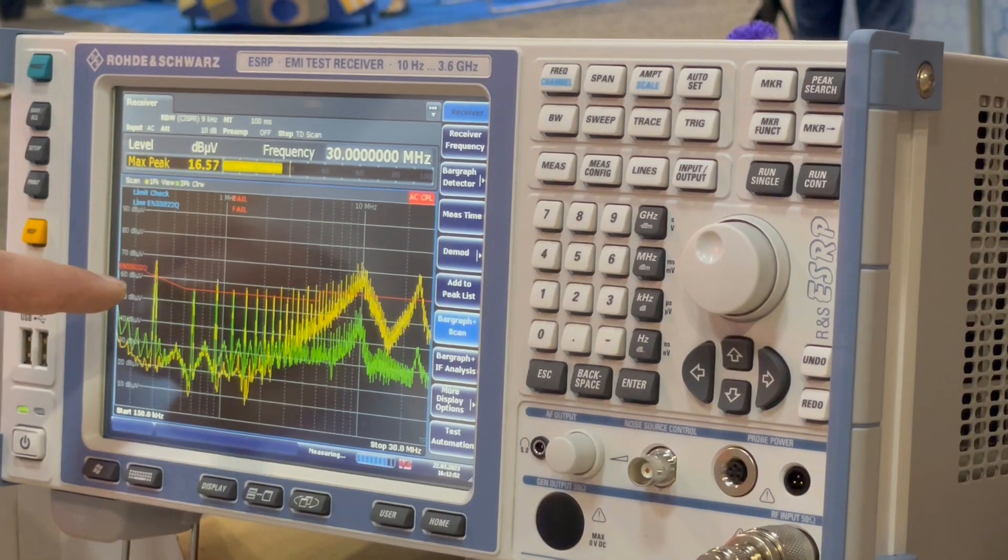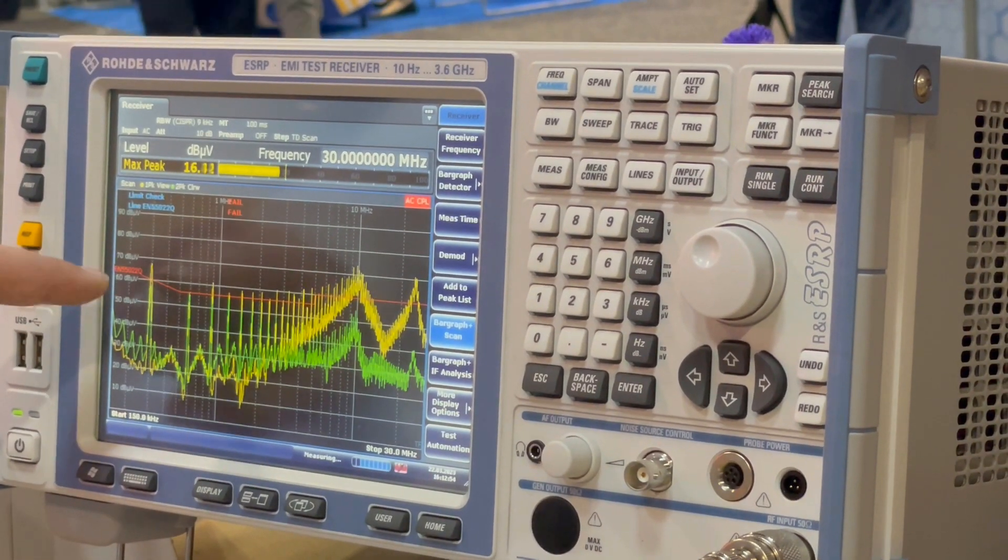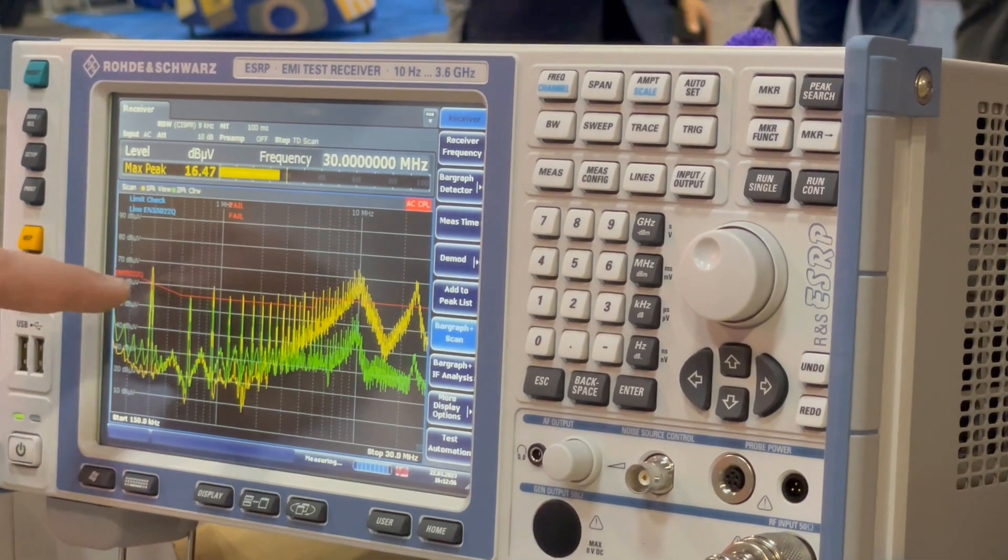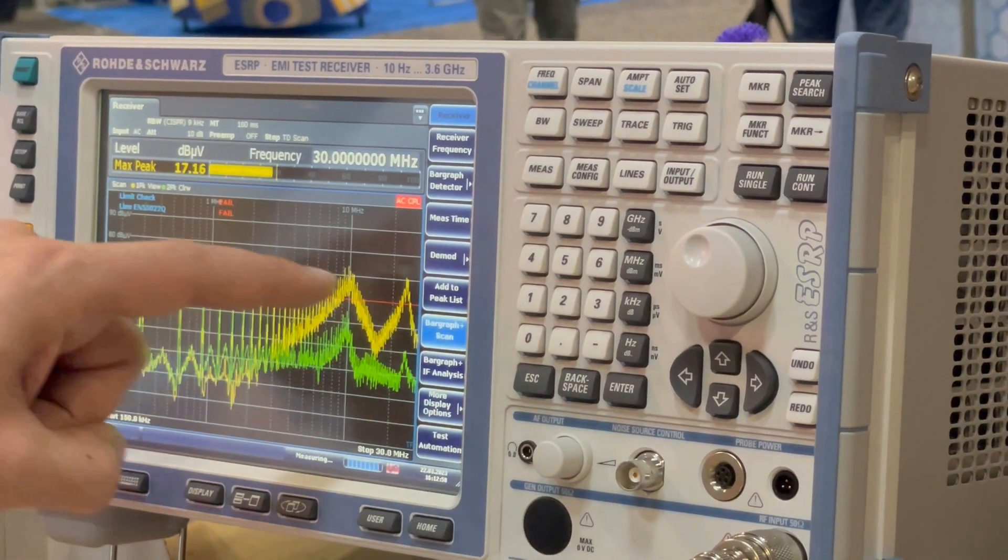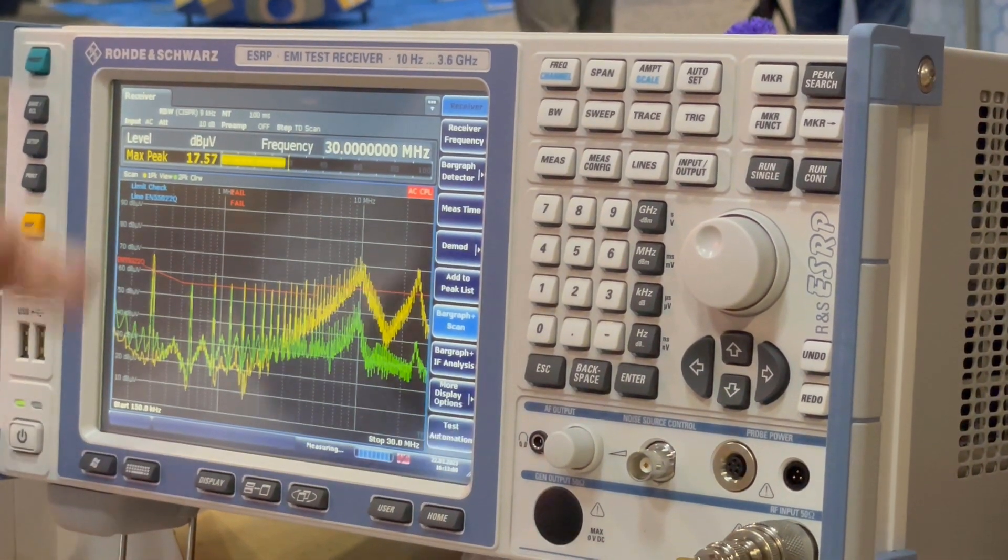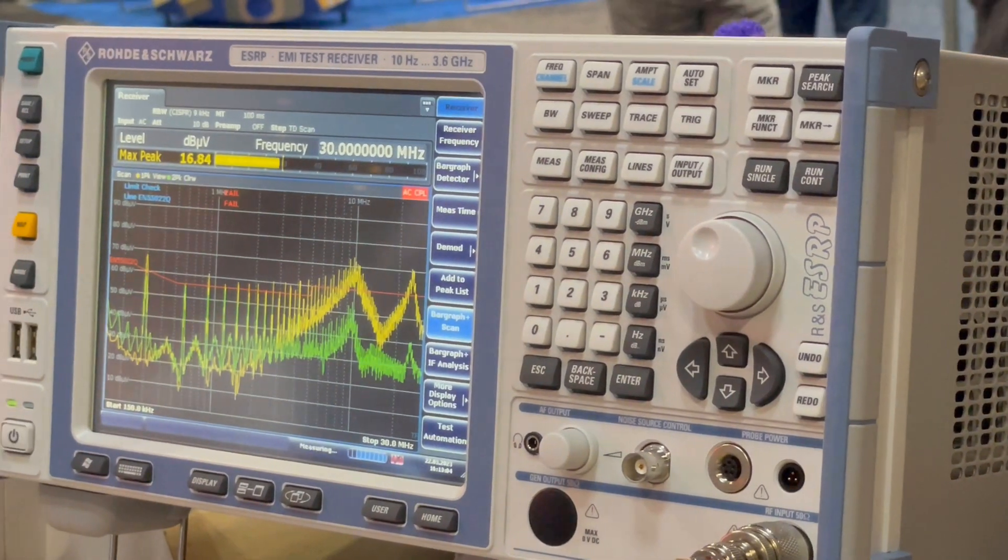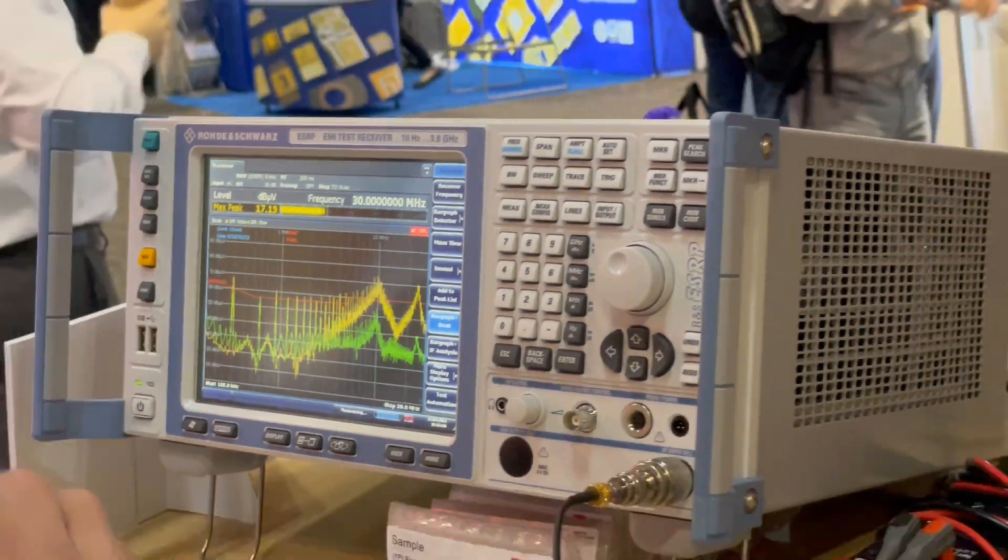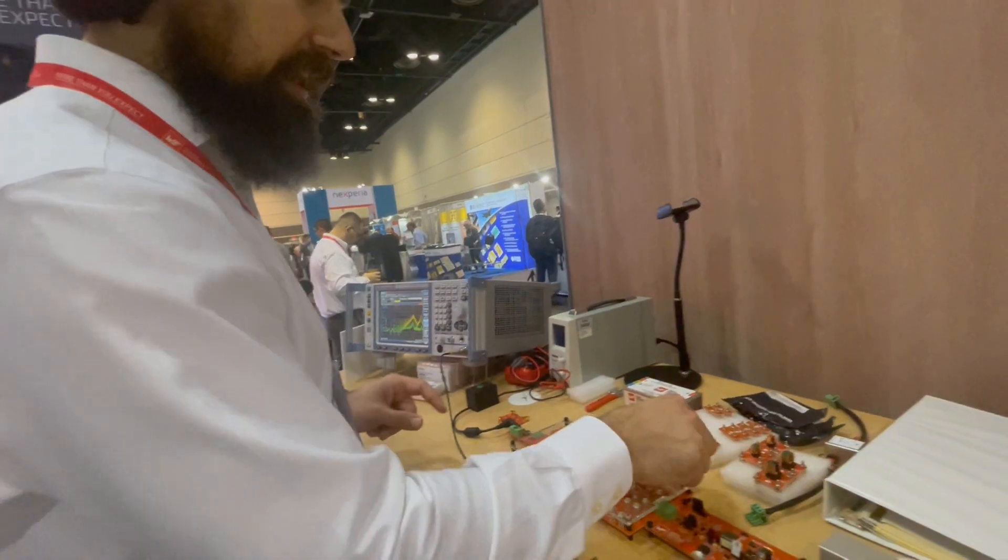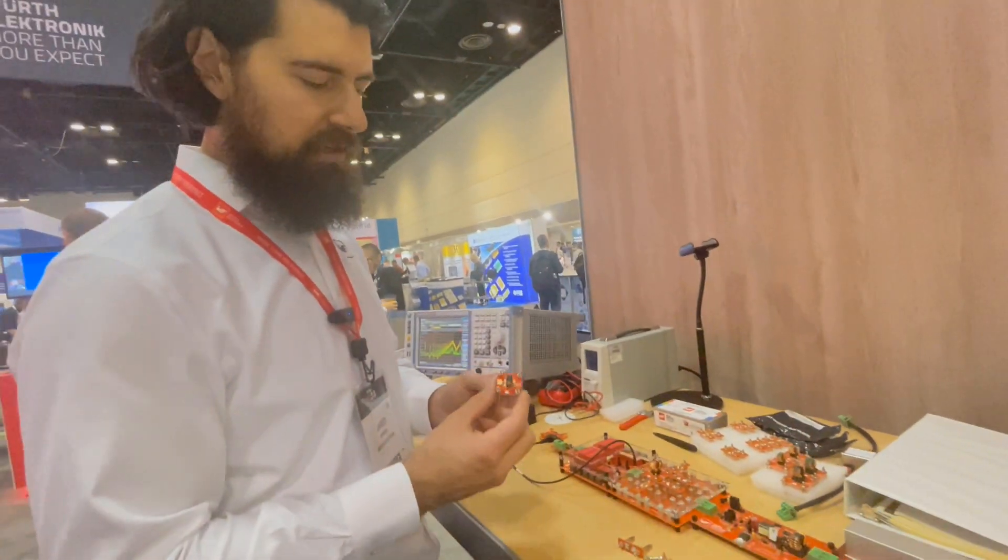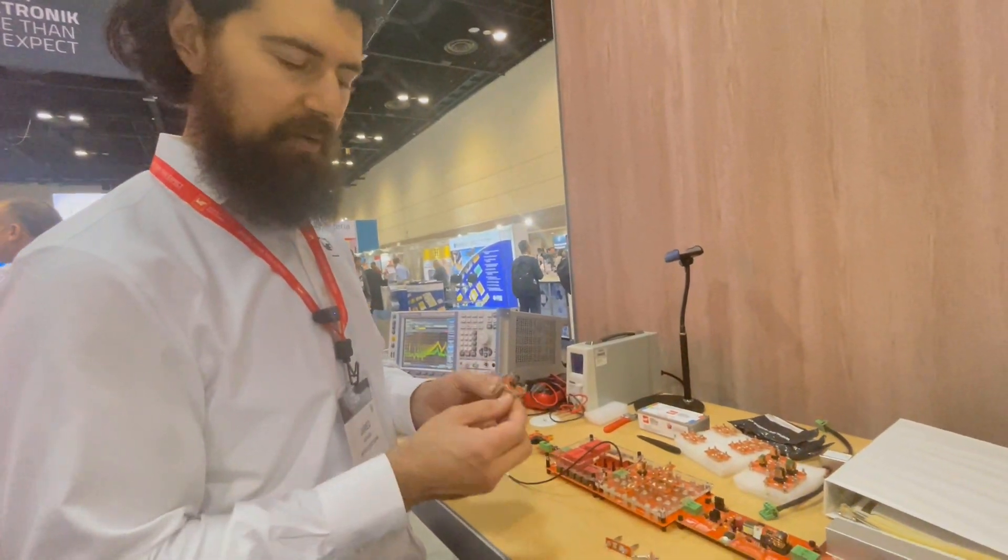So now this green line is the conducted emissions noise with that manganese zinc common mode choke in the circuit. So now in most frequencies we pass. This might be hard to see but now we're below 60 dB microvolts on the peak. All the harmonics are much lower and then even in this 10 MHz range we have really good attenuation from that common mode choke as well. So that's great. We passed.